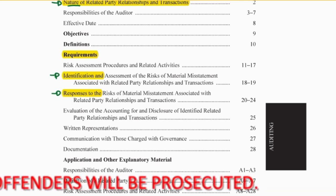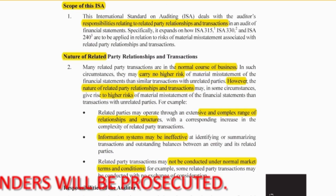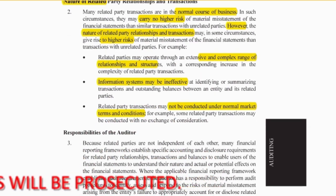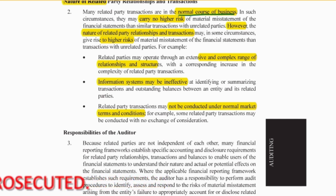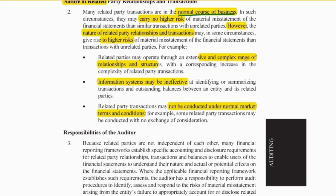Many related party transactions are in the normal course of business. For example, they transact with the holding company who is a supplier of the goods that they need, very similarly to the way they transact with another supplier who is not related. So they operate within the normal course of business, and they don't have a very high risk because you expect the transaction to be at arm's length.